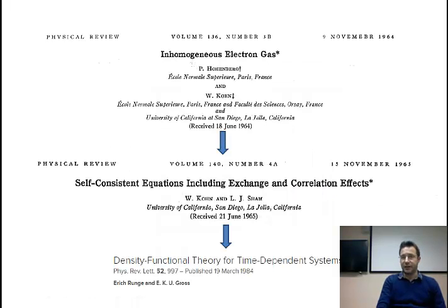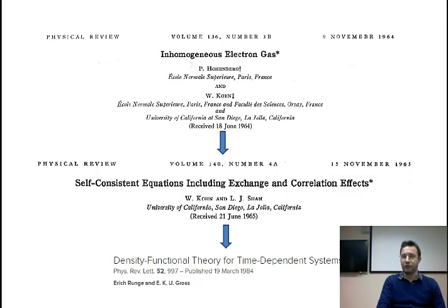DFT was born in 1964. The modern DFT as it is known today was born in 1964, and the first paper was written by Hohenberg and Kohn, which was about inhomogeneous electron gas. This is basically where they put the foundations of modern DFT.